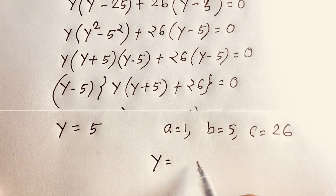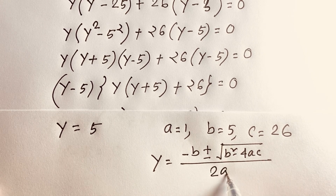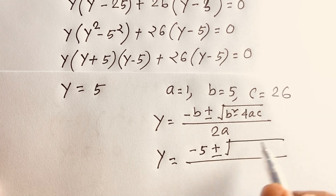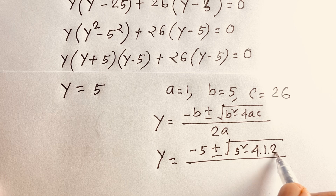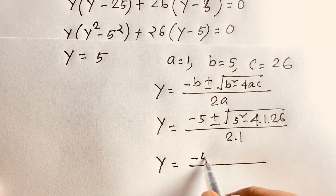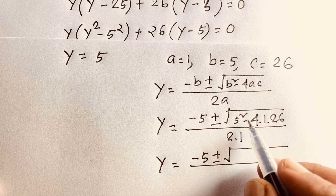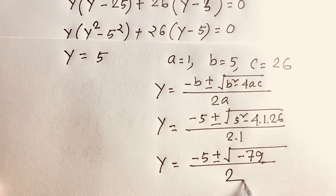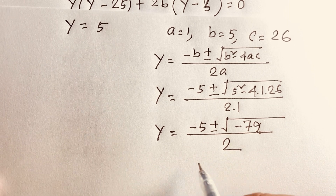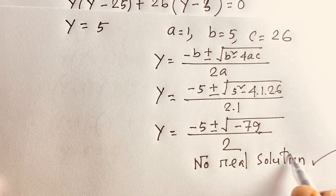So I can say y equals negative b plus or minus square root of b² minus 4ac, over 2a. That gives y equals negative 5 plus or minus square root of 25 minus 104, over 2, which is negative 5 plus or minus square root of negative 79, over 2. This is a complex number — there is no real solution here.